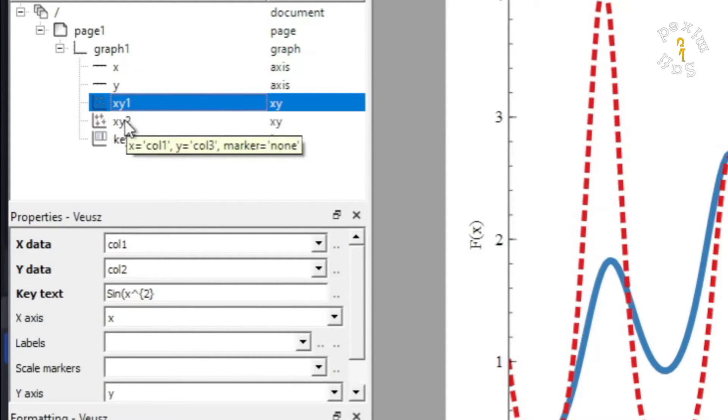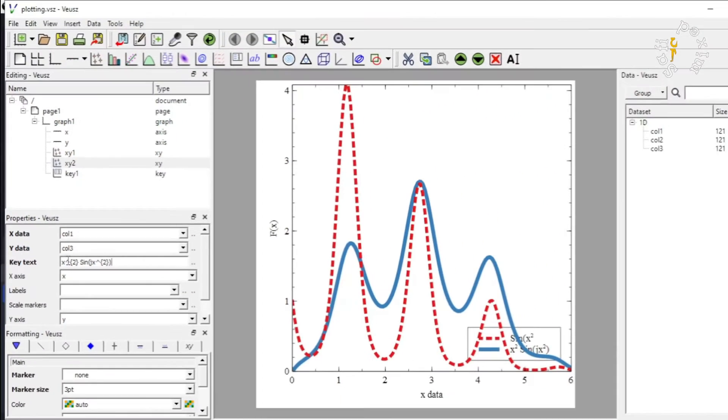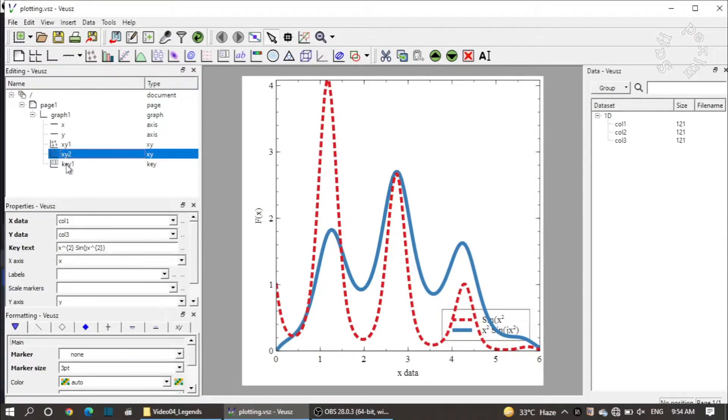Similarly, if I click on the second plot, the same would appear over here. I want to add here x squared times sine of x squared. If I enter information about that, it would also be added.